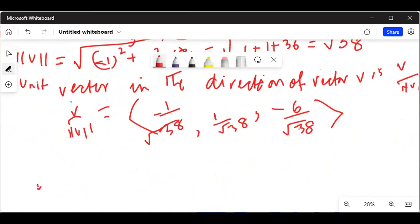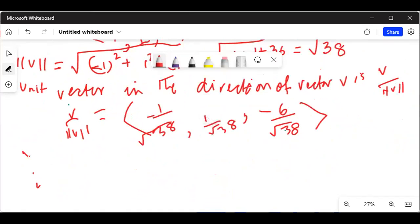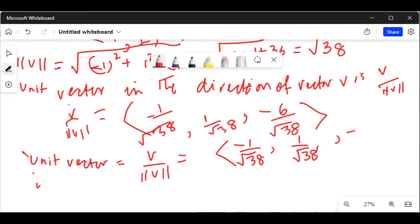So the unit vector is V over magnitude of vector V, which equals ⟨minus 1 over square root of 38, 1 over square root of 38, and minus 6 over square root of 38⟩.